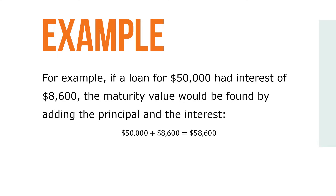For example, if a loan for $50,000 had interest of $8,600, the maturity value would be found by adding the principal and the interest: $50,000 plus $8,600 equals $58,600 for a maturity value.